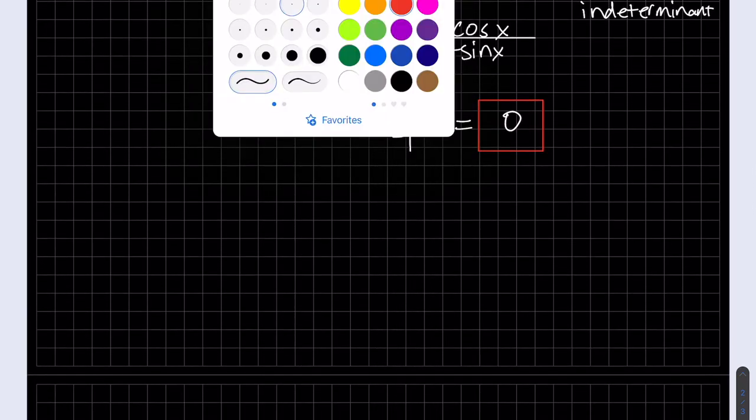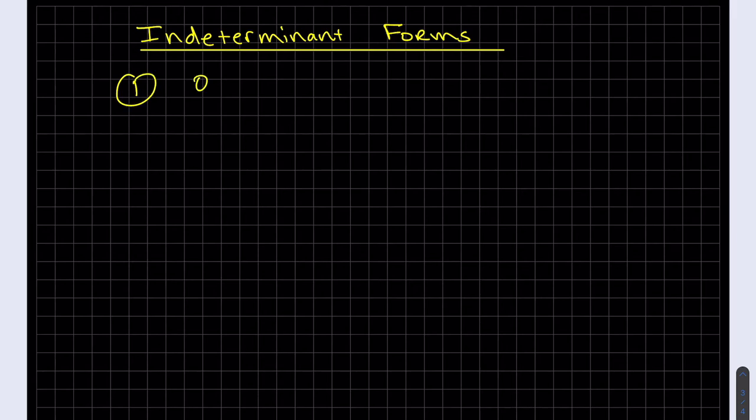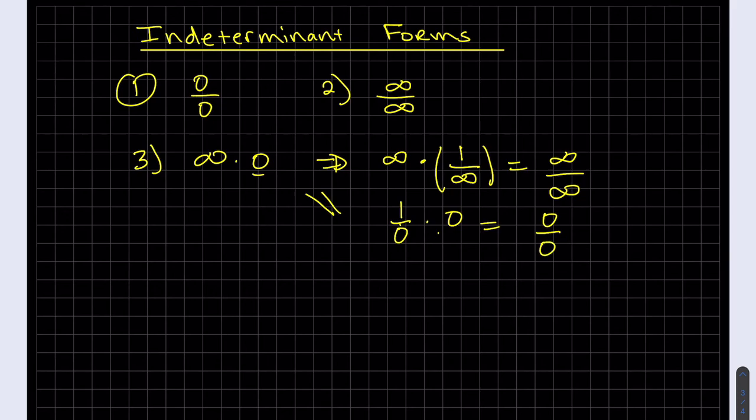Let me give you a list of indeterminate forms. It's helpful to know when you're finding limits. The first one we learned in Chapter 1, and our second one in Chapter 1. In this section, we learned infinity times 0 is indeterminate. We can change this to infinity times 0, which can be written as 1 over infinity, which becomes infinity over infinity. And we can also change it to infinity over 0 times 0. So this can be changed into either form.